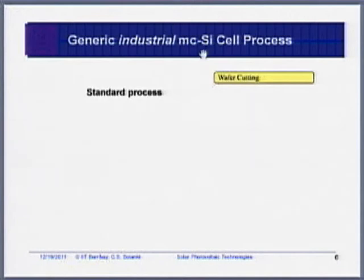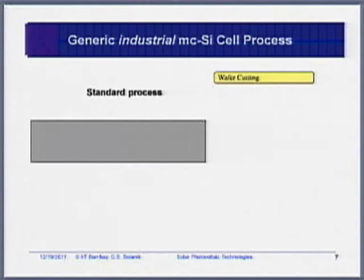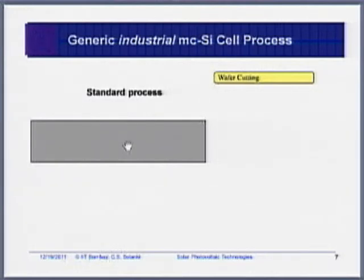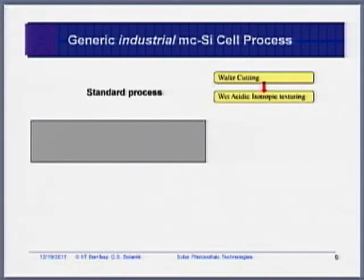For the standard process, you start with wafer cutting. Normally you buy silicon wafers directly from the market — this is your starting point. The doping of your silicon wafer is already predetermined because you buy your wafer as per the doping requirement. The next process is normally to texture it, but first you must also clean the wafer since it is coming from the sawing process.